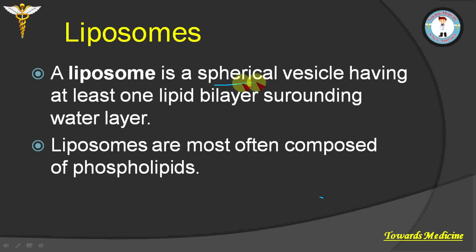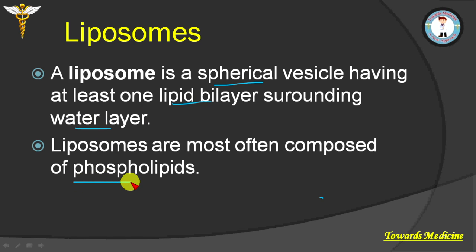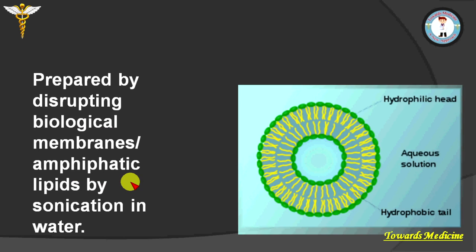A liposome is a spherical vesicle made up of a lipid bilayer surrounding a water layer. They are mostly composed of phospholipids. You can see here this is a lipid bilayer and this lipid bilayer is surrounding a layer of water.